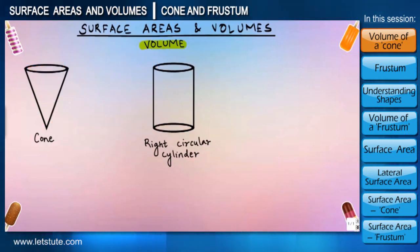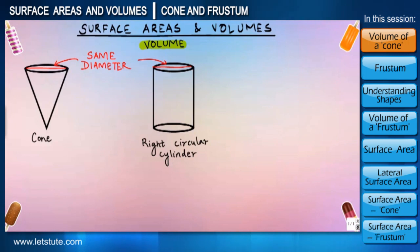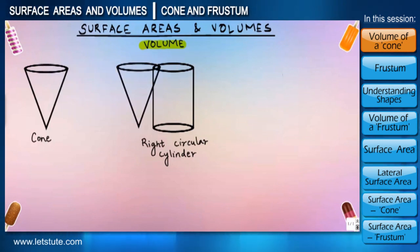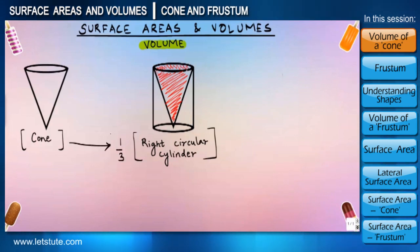So suppose in both these shapes we try to keep two parameters same. First the diameter and second the height. Next thing we try to do is to fit the cone into that cylinder. And now if you look at it, the cone will seem to be just one third of a cylinder. This is often used as a way to remember the volume of the cone.